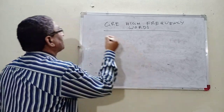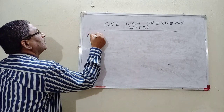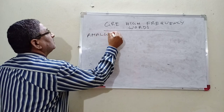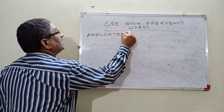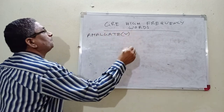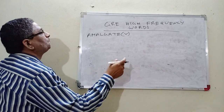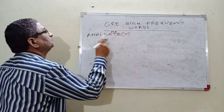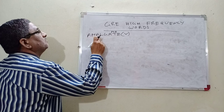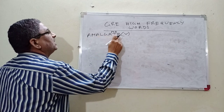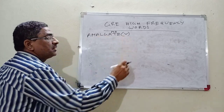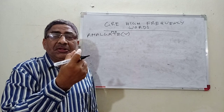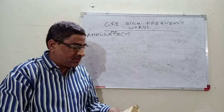Next word: Amalgamate. What is amalgamate? To combine into a single body — that is called amalgamate.